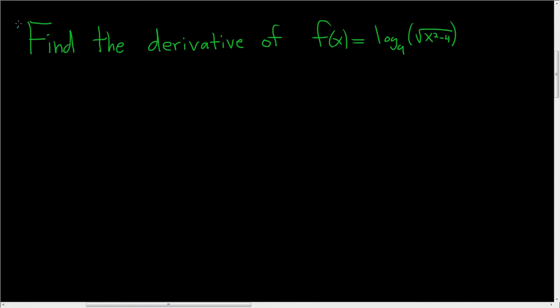Find the derivative of the log base 9 of the square root of x squared minus 4. Before we can take the derivative, or rather, it's a good idea to rewrite this before we take the derivative. You can just take the derivative, but it's probably better to rewrite this.